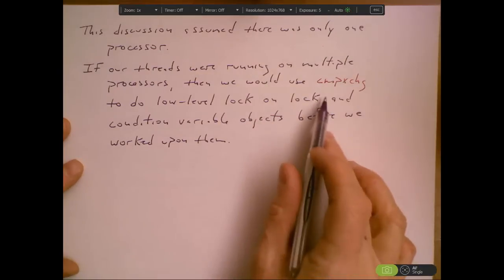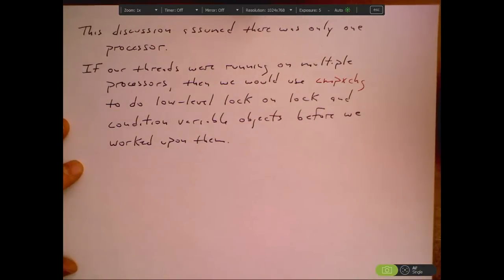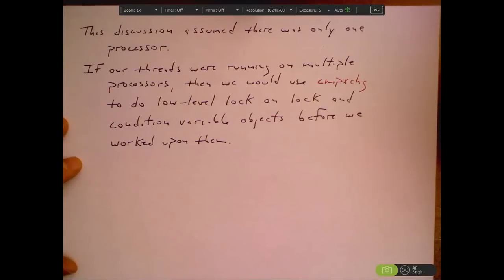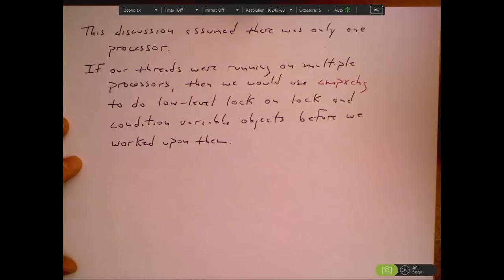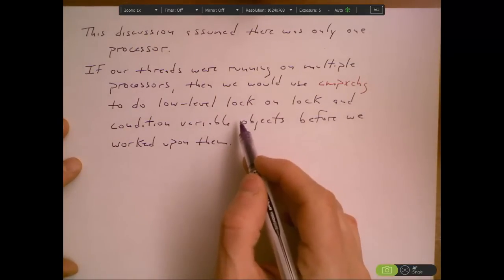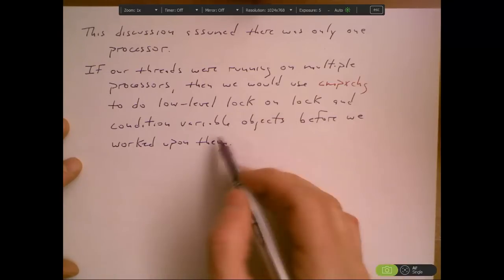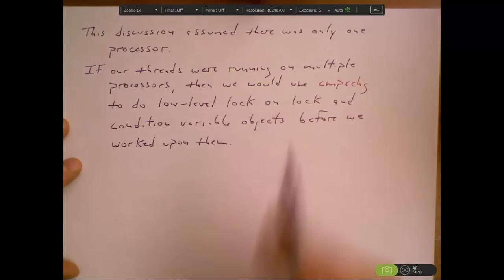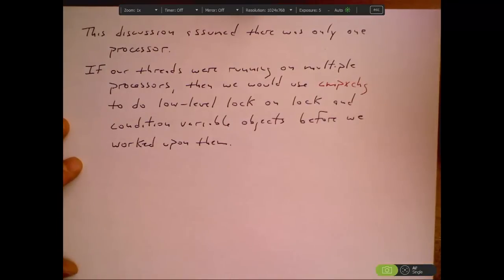And again, I actually mentioned that in the discussion of compare and exchange earlier in the course. So you want to go back and look at those slides. But that's how you would do this. You would use compare and exchange to do a low level lock just to make sure you have exclusive control of these lock and condition variables, these higher level concepts. That you have exclusive control of the objects that are implementing those higher level concepts before you start working upon them.